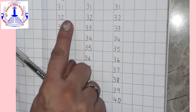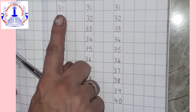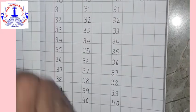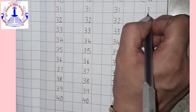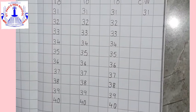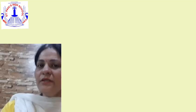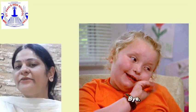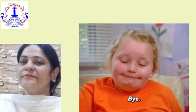So children, today what have we written? Numbers 31 to 40. Now, this line you are going to practice at home. So what have we done today? We have written numbers 31 to 40. Now you all are going to practice this at home. Okay children, bye bye.